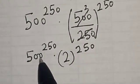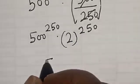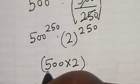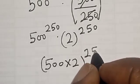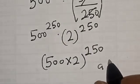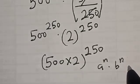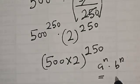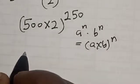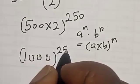Now in this case they have the same exponents, 250 and 250. This becomes 500 multiplied by 2, raised to power 250. That is, if you have A raised to power N multiplied by B raised to power N, this is equal to A multiplied by B raised to power N. So 500 times 2 is 1000, raised to power 250.